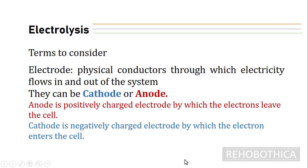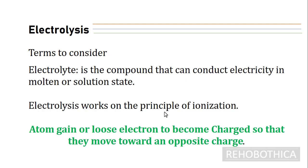The electrons flow to the cathode, and then flow through the system, completing the circuit by flowing out through the anode. That is basically what happens in terms of electron flow.